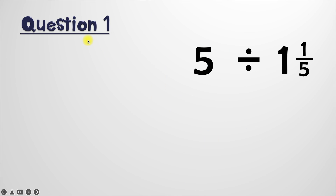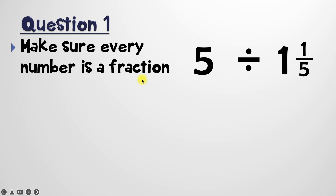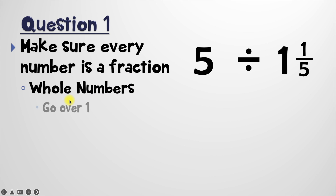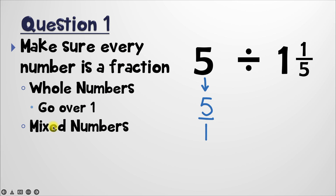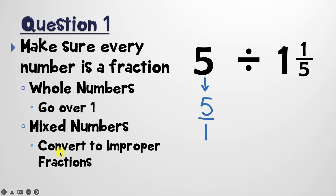So in question one, we have a whole number five divided by a mixed number, one and one-fifth. The very first thing we need to do is make sure that we turn everything into a fraction. For whole numbers, we have to make this a fraction by putting it over one. So where we have the number five, I'm going to rewrite this as five over one. And whenever we have mixed numbers, what we need to do is convert those mixed numbers into improper fractions.